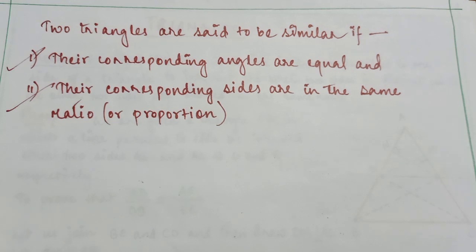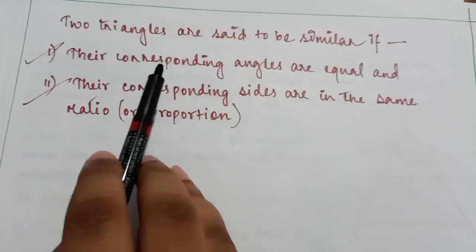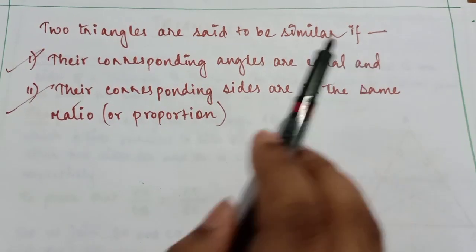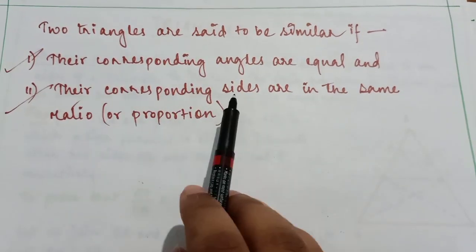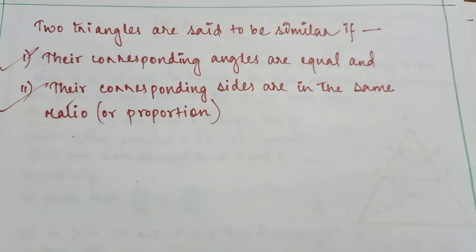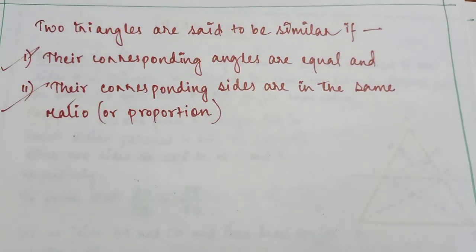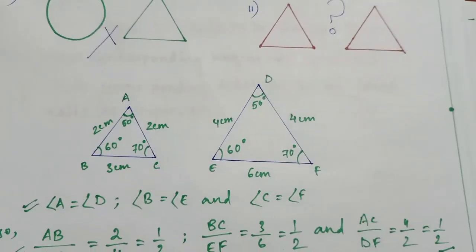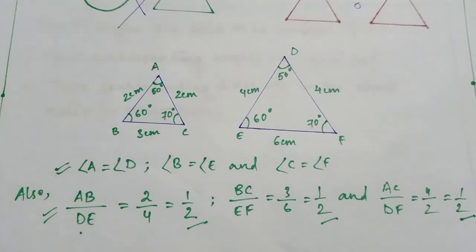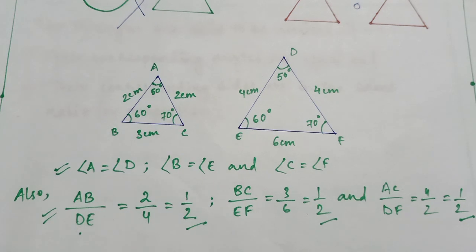Two triangles are said to be similar if their corresponding angles are equal and their corresponding sides are in the same ratio or proportional. That is how we say two triangles are similar.